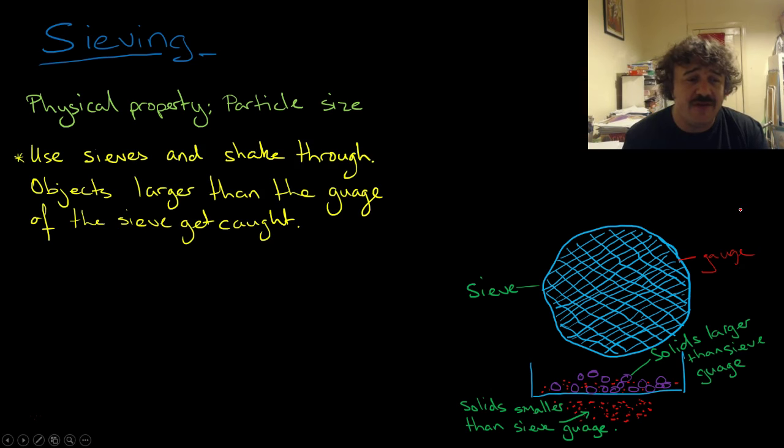So you use sieves and you shake your mixture through. Objects which are larger than the gauge of that particular sieve get caught, which you see here. Here we've got small gritty stuff plus larger rocks. And as we shake it, the rocks which are larger than the gauge stay in the top.